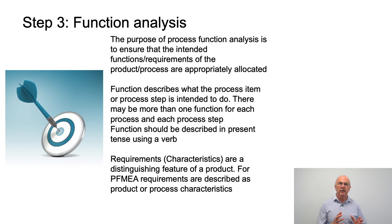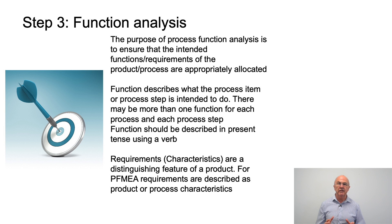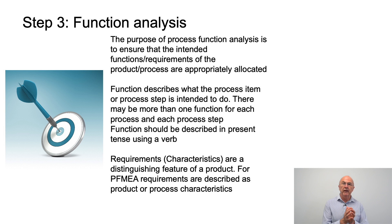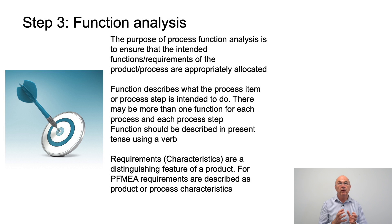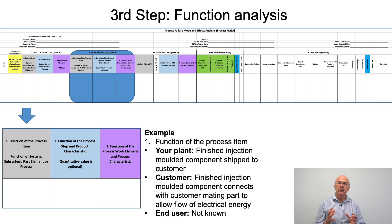Step three is function analysis. The purpose is to ensure that the intended functions and requirements of the product and the process are appropriately allocated. A function describes what the process item or process step is intended to do — there may be more than one function for each process step, and functions should be described in the present tense using a verb. A requirement, sometimes called a characteristic, is a distinguishing feature of a product. For a process FMEA, requirements could be product characteristics or process characteristics.